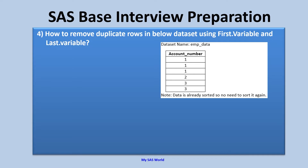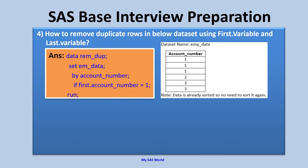How would you write the code? Here it is. We are doing data remove_duplicate, then setting the data EMP_data by account number. Using the by statement creates by group processing. There will be one group for the first three observations of 111. In that group, we are saying only pick first dot account number equal one — so only pick the first observation and the rest two observations would be deleted. This is the first group, the second group has a unique value 2, and the third group has two observations of 3 3.